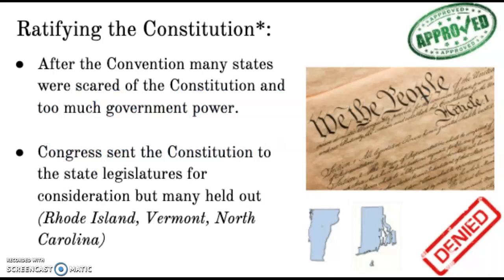Going back to a bit of the history: after the Constitutional Convention and the Great Compromise, many states were scared that the Constitution gave too much power — too much power to the executive, the legislative, and the judicial. People said, what about not only the small states, but what is the guarantee for the individual?